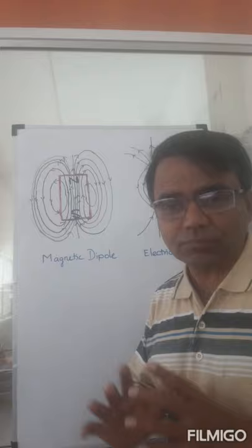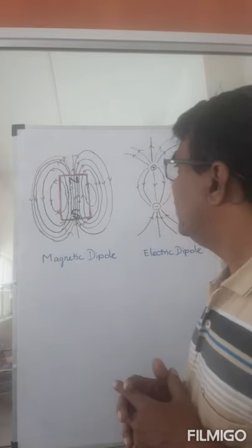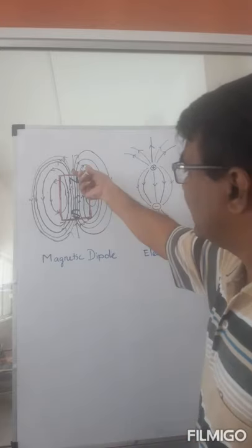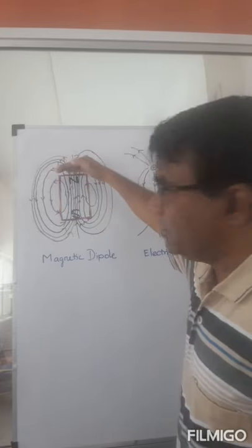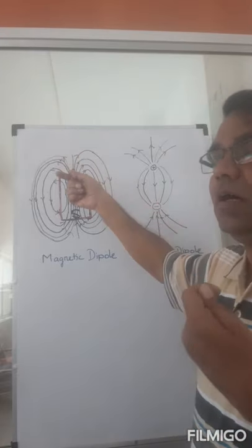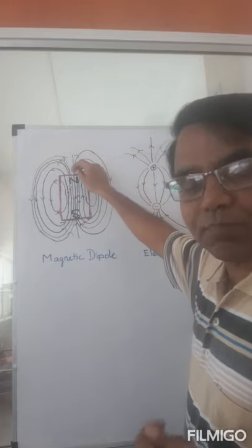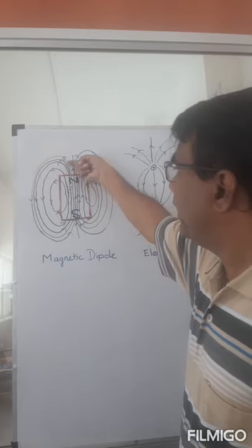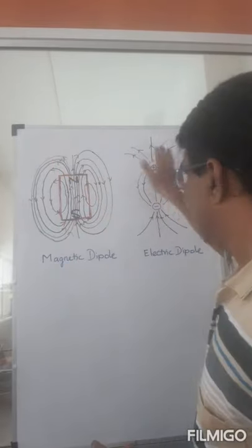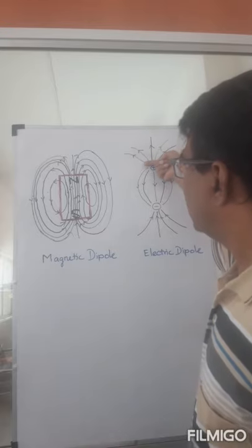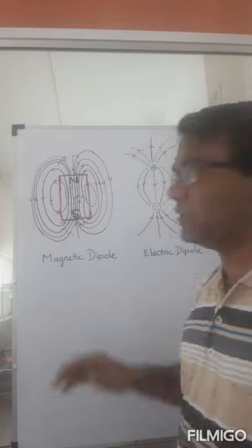Other than this fundamental difference between magnetic field lines and electric field lines, pretty much everything else is similar. If the lines are close together and crowded, the magnetic field is strong there. A larger number of field lines per unit area means the field is stronger at that place, and as you go away, you have fewer lines per unit area, so the field becomes weaker.